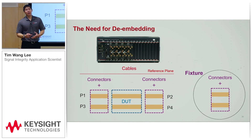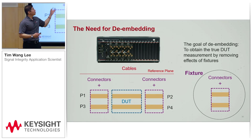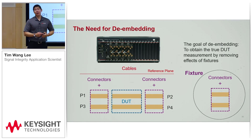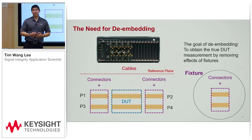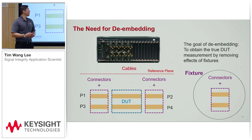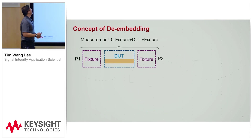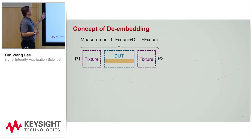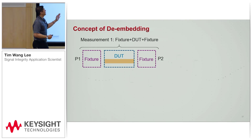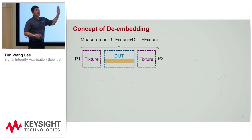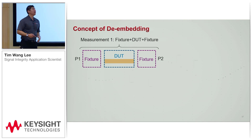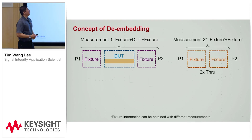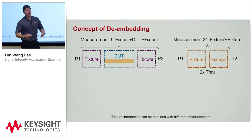What de-embedding is doing is removing that fixture to get you the true device under test measurement. The concept is like this: you have port 1 going through a fixture to a device under test, and you have another fixture going through port 2. Now you can make a separate measurement on the fixtures by themselves.